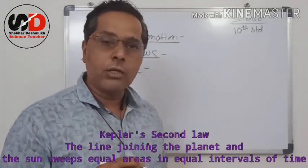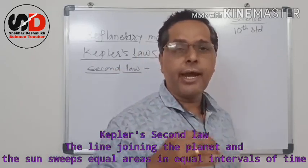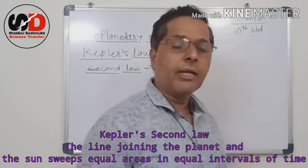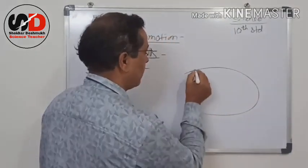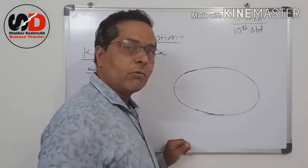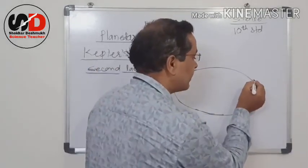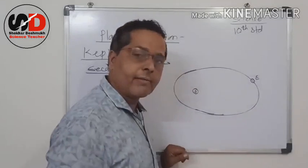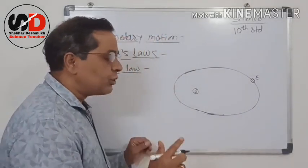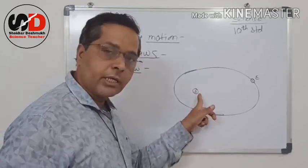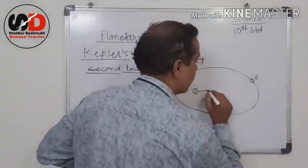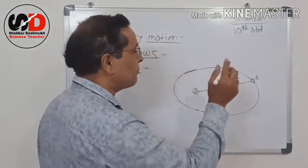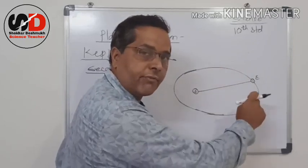According to Kepler's second law, the line joining the Sun and the planet sweeps equal area in equal interval of time. Suppose this is the elliptical orbit of Earth. The Sun is at one of the foci. The line joining the Sun and the planet sweeps equal area in equal interval of time. Earth requires 365 days to complete one revolution.